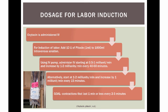For labor induction, oxytocin is administered intravenously. The nurse should add 10 units of Pitocin to 1,000 milliliters of intravenous solution. Using an IV pump, start the infusion at 0.5 to 1 milliunit per minute and increase by 2 milliunits per minute every 40 to 60 minutes.